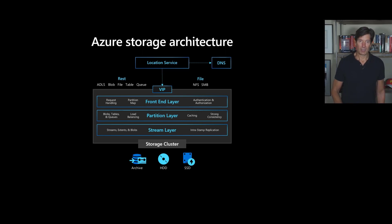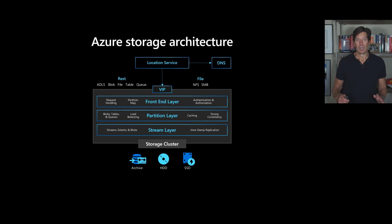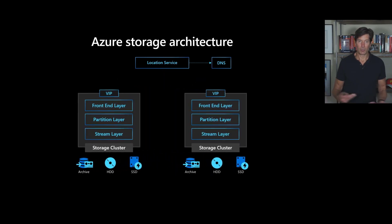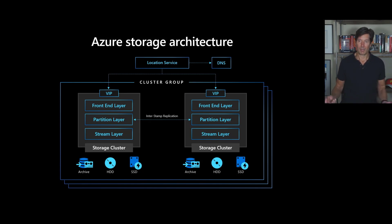You get the same data replication and durability out of all these. You get the same kind of tiering from hot storage and SSDs down to cool storage and hard disks, down to cold storage that might be on tapes or on very efficient storage spinning media services. On top, we've got replication and cluster groups that support intra-stamp replication, disaster recovery replication across regions, and object-level replication — something we recently introduced into Azure Storage.